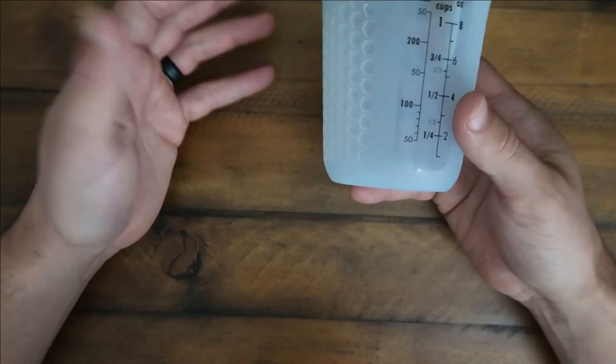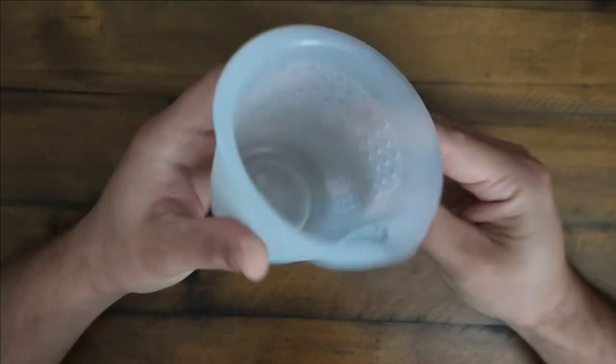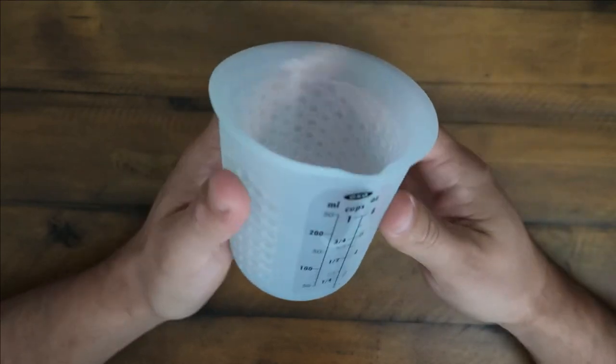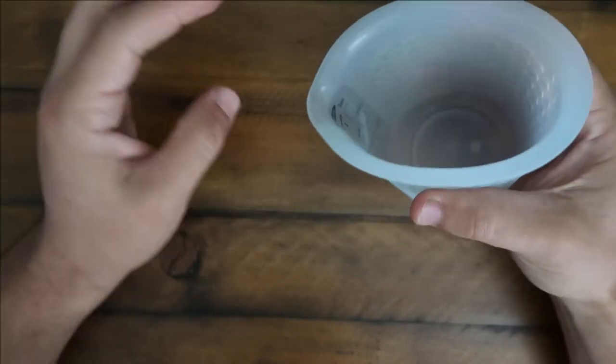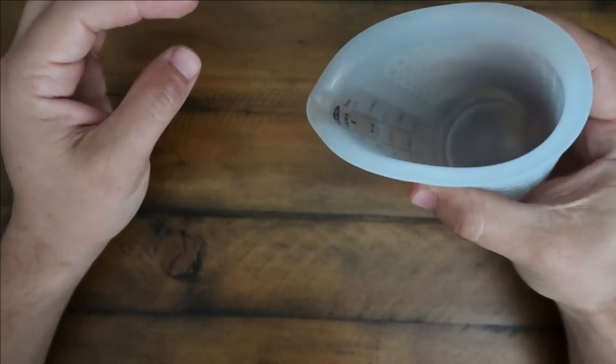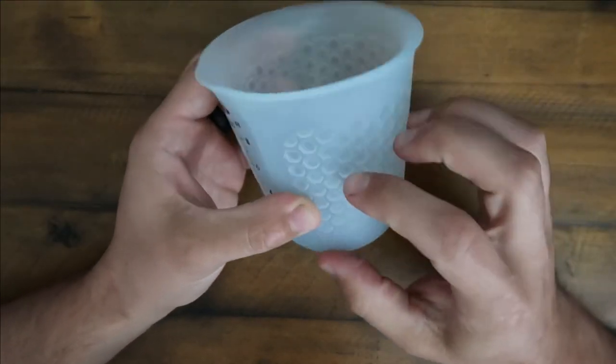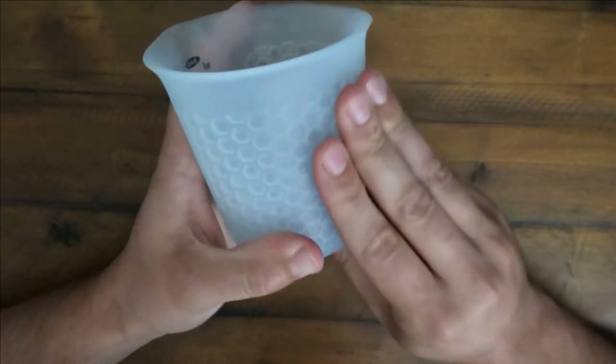They're dishwasher safe so you can just toss them in the dishwasher. They're just a really good product and it's got a grip on the side so when you pour some product or if you're doing a slow pour you can just pinch it and slowly pour it. It's got a nice hexagon grip.